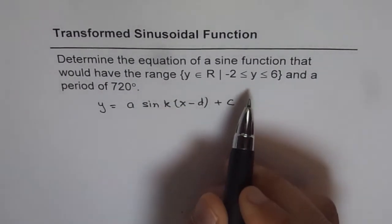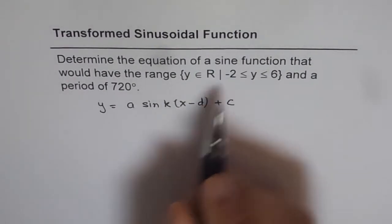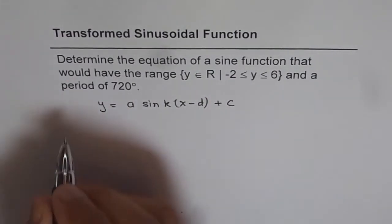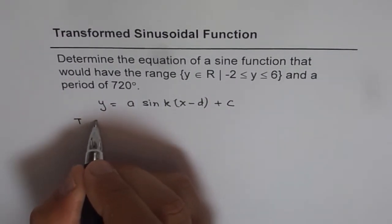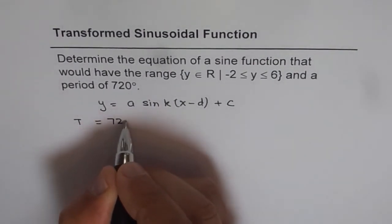Now what is given to us? It is given to us that the time period is 720. So we will say T, the time period, equals to 720 degrees.